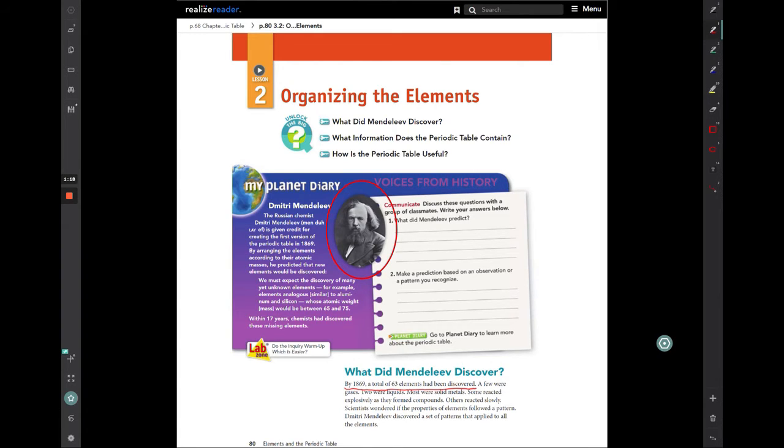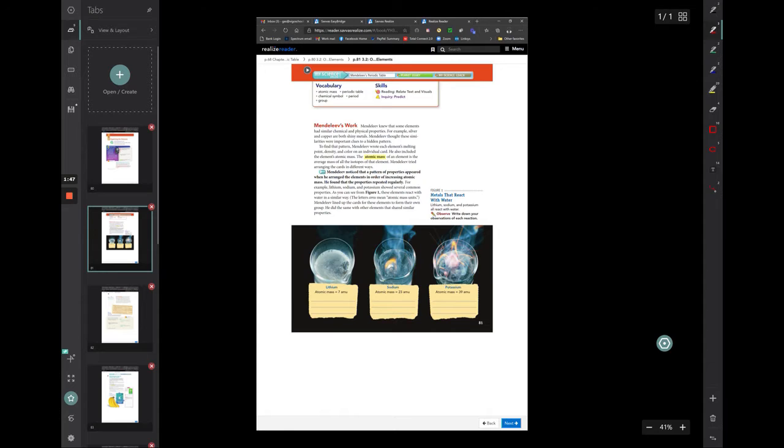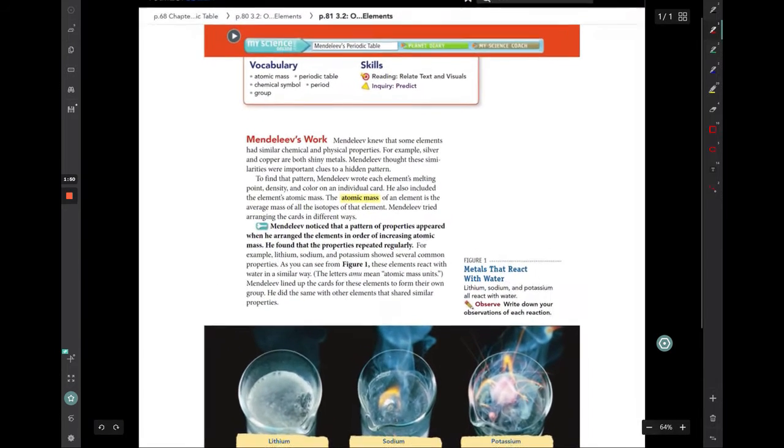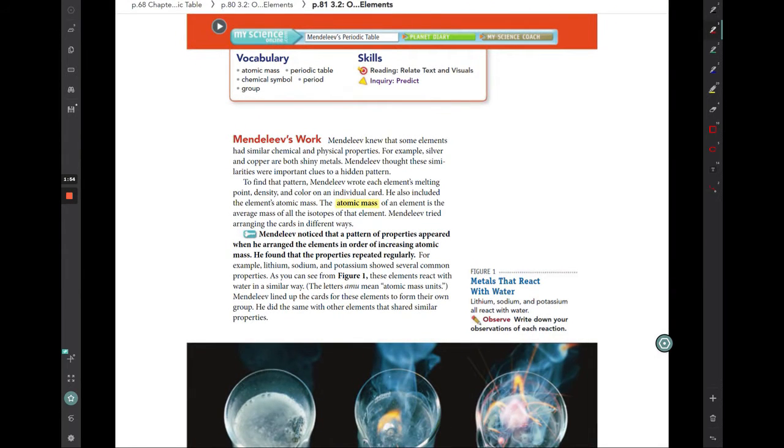A few of them were gases, there were a few liquids, most were the solid metals, and they were already beginning to see the properties that these elements had. And the scientists wondered if those properties of the elements would follow some sort of pattern. And it was Mendeleev who discovered the set of patterns that apply to all of the elements that we see on the Periodic Table.